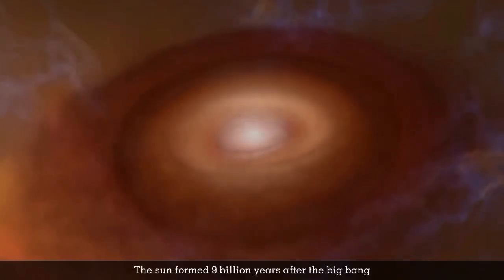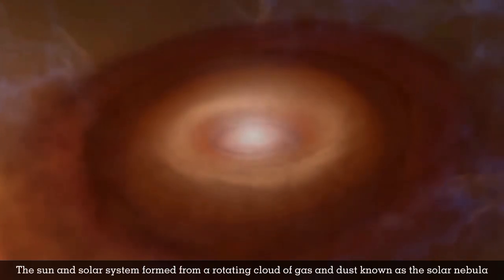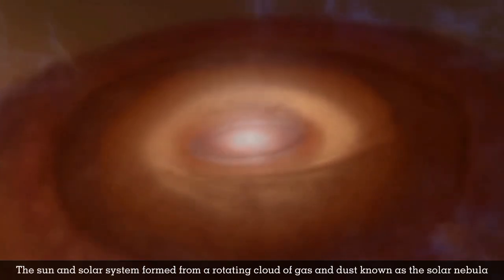The sun formed 9 billion years after the Big Bang. The sun and solar system formed from a rotating cloud of gas and dust known as the solar nebula.